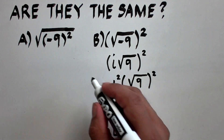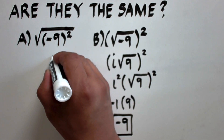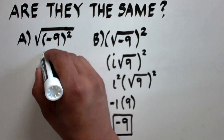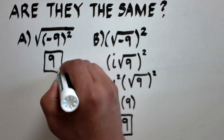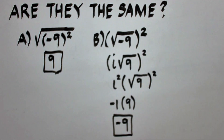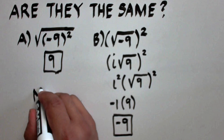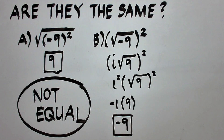To summarize: the first expression is equal to positive 9, and the second radical expression is equal to negative 9. So they are not the same. Thank you very much, and we hope to see you again in our next video. Bye for now.